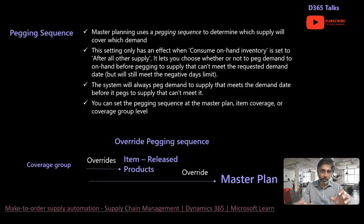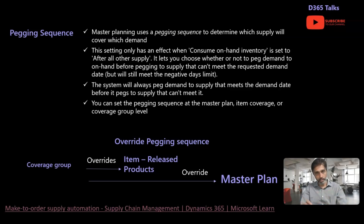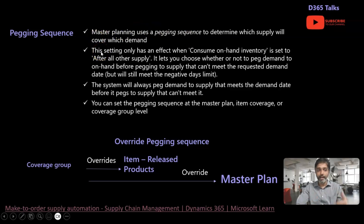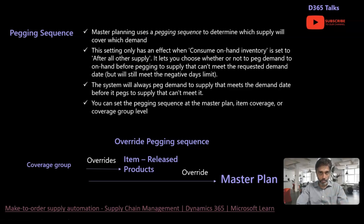Master planning uses the pegging sequence to determine which supply will cover which demand. If you have a demand for an item and a supply for the item, you define in the pegging sequence how you want to peg the supply to respect your demands. You need to completely understand what sequence the system takes based on the various options available in Dynamics 365 to configure this.